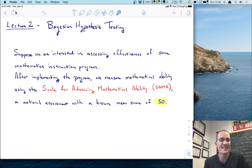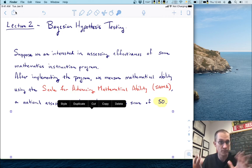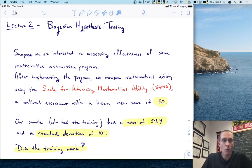Suppose we are interested in assessing the effectiveness of some mathematics instruction program. After implementing the program we measure mathematical ability using the scale for advancing mathematical ability or the Sama. This is a fictional scale but let's suppose it's a national assessment with a known mean score of 50. Now we had a sample who did some training and we found out that they had a mean of 54.4 and a standard deviation of 10.